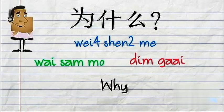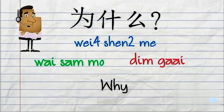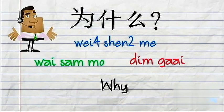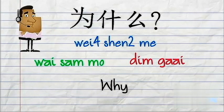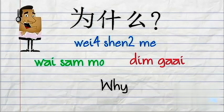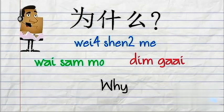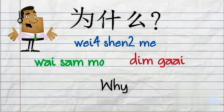为什么 basically means 'why'. And in Cantonese, we say 爲解, and it's used in the exact same way. So the girl is saying 爲解你的手机好似坏了? — 为什么你的手机好像坏了?